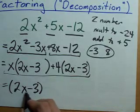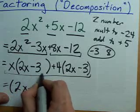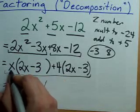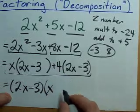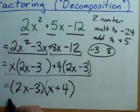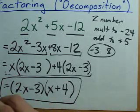If you pull that out, what are you left with? Here, you pull out the 2x minus 3, you're left with an x. Here, you pull out the 2x minus 3, you're left with a plus 4. And that, my friends, is your factored expression.